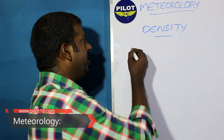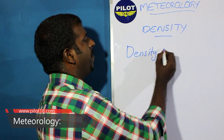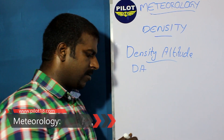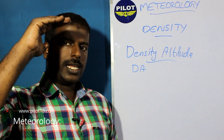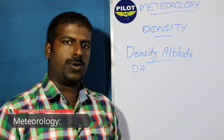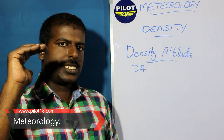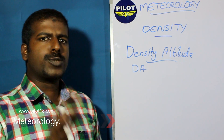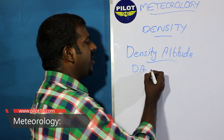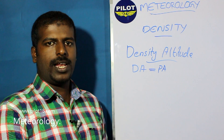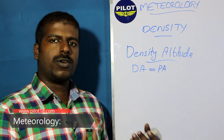Now let's consider density altitude. As per ISA conditions, density decreases with height, so there should be some prescribed density at a given altitude. The altitude at which a prescribed density can be found is the density altitude. If ISA conditions are prevailing in the atmosphere, then density altitude must be equal to pressure altitude.